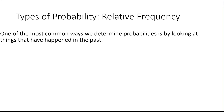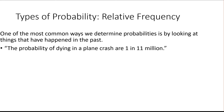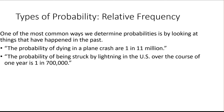We have a couple of different ways of calculating probability. One type is experimental probability, or relative frequency probability. That's when we look at data and calculate the relative frequency — the percent of the time something happened. For instance, if the probability of dying in a plane crash is 1 in 11 million, the probability of dying would be 1 over 11 million. Or the probability of being struck by lightning in the U.S. would be 1 over 700,000.